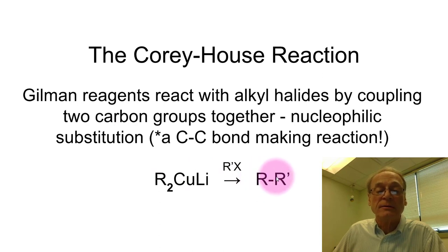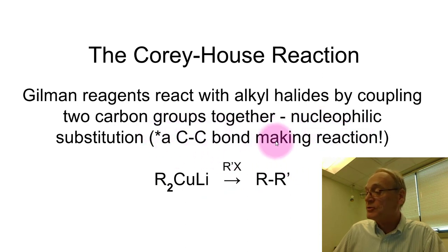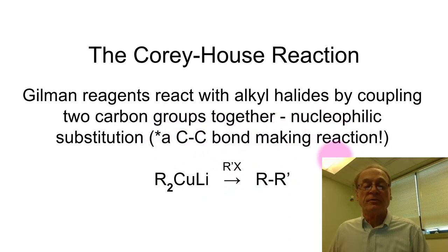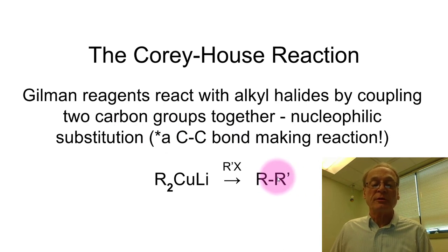You get a new carbon-carbon bond between the two R groups, and we make a compound that is a longer chain than either of the two starting materials. In other words, it's a carbon-carbon bond-making reaction, which is why we put an asterisk next to it — we can build up bigger skeletons from smaller ones.